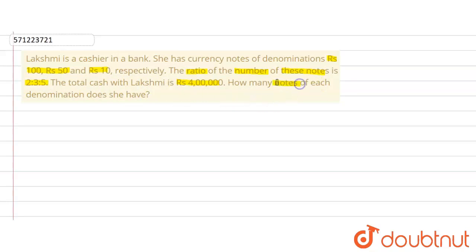We are supposed to find out the number of notes of each denomination. Denomination means rupees 100, rupees 50 and 10. How many notes of such denominations are present with her or does she have? So let's do this question.